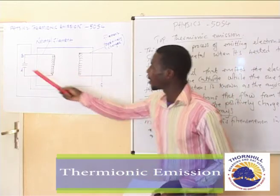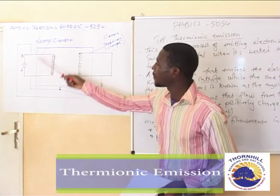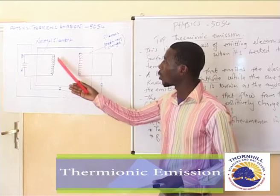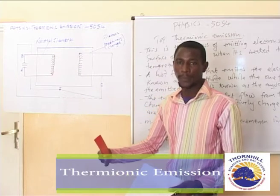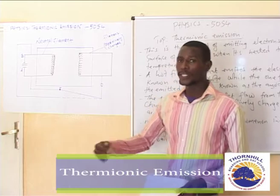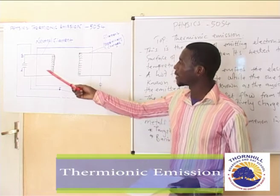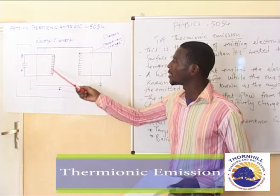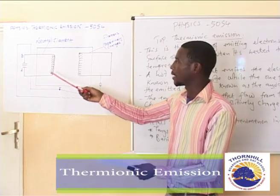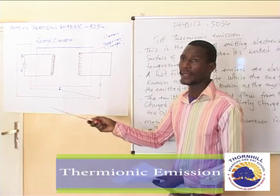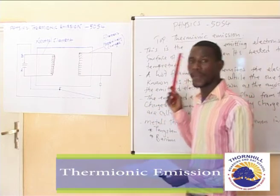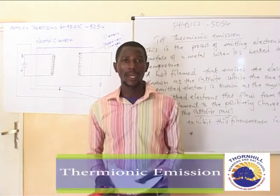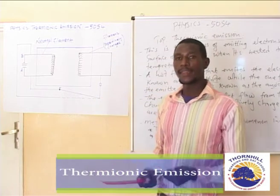In this diagram, we have the filament connected to a circuit which provides enough current to cause it to heat up. If it is heated to a high temperature, we expect the electrons on the surface of this filament to escape from its surface. When this happens, it is the same process we referred to earlier — this process is what we call thermionic emission.